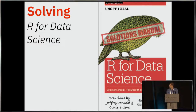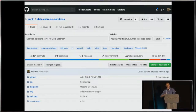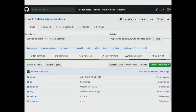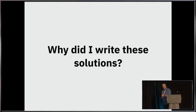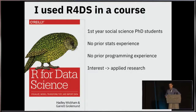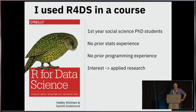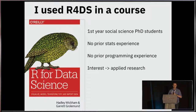Hopefully that's not too much of a letdown. As one would expect, these are a set of exercise solutions to all exercises in R for Data Science. It is up on GitHub, and it is all done with Bookdown and compiled to a nice, pretty website. But why did I write these solutions? This was from my previous life as an academic. I was using R for Data Science in a course — I was responsible for teaching the first-year sequence of quantitative methods to social science PhD students. I really couldn't assume any prior statistical experience, nor any prior programming experience, and they were interested in getting to do applied research, not in the theory behind it.